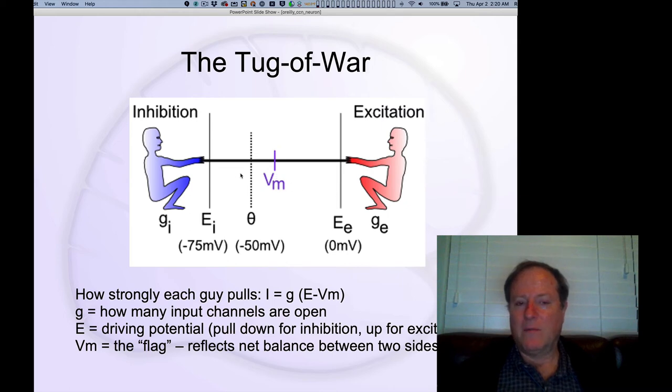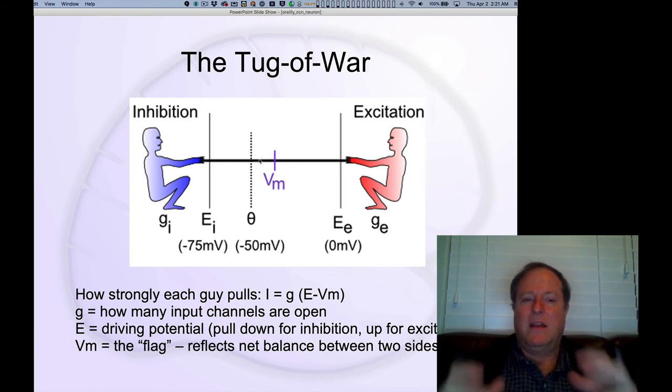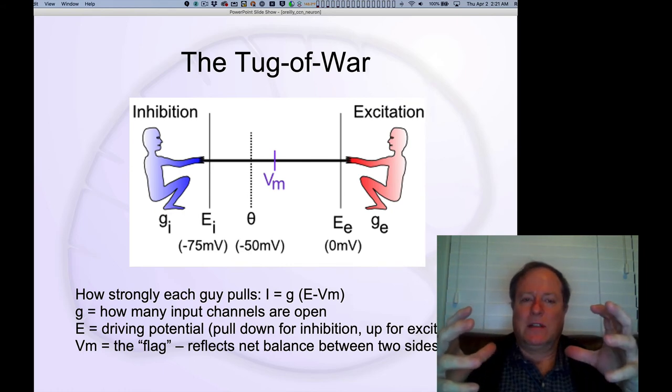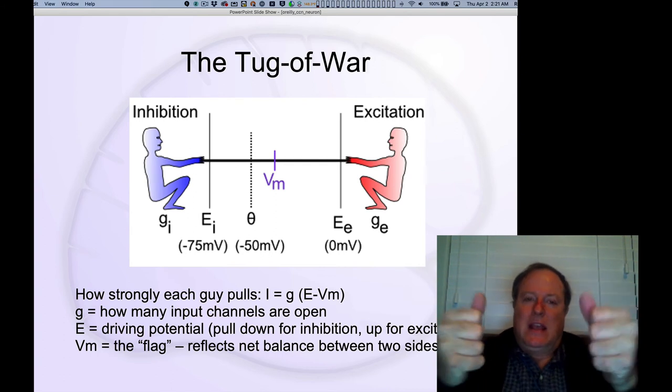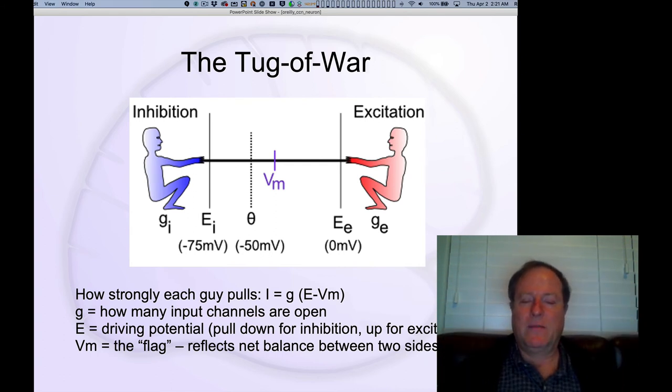And so if inhibition is very strong and pulling the membrane potential down closer to the inhibitory reversal potential, then in fact it ends up pulling less, and there ends up being less and less current, such that in fact when the membrane potential is at the reversal potential, effectively the inhibition is exerting no force at all. And what that means is that even a little bit of excitation can start to pull the flag off of that baseline, yank it up more towards the center, but that as soon as the excitation starts doing that, then all of a sudden this latent kind of force that's been sitting there but hasn't been able to be exerted, gets exerted, and that inhibition pulls back very strongly. And this is called shunting inhibition, and you may have heard of that term.